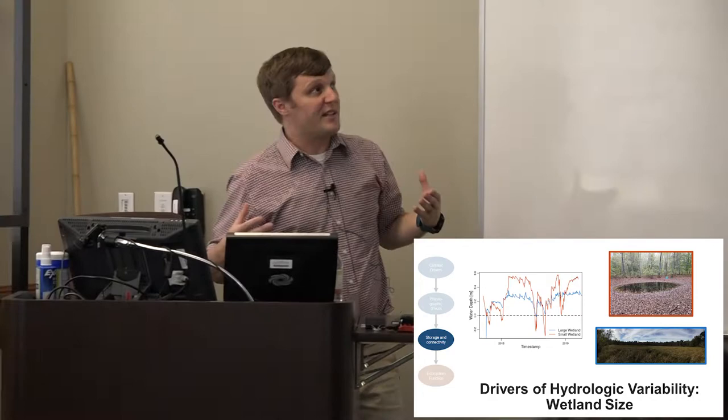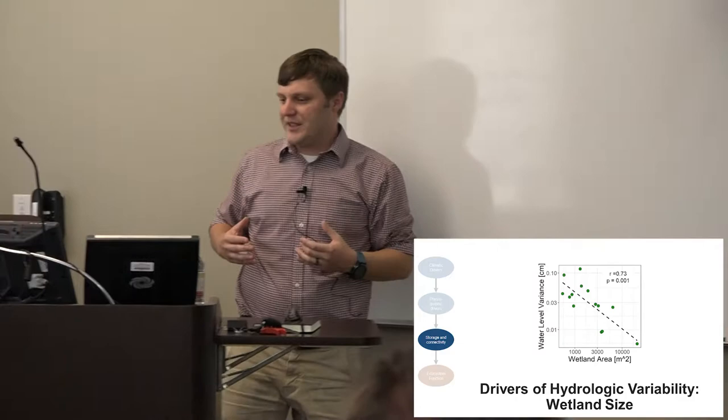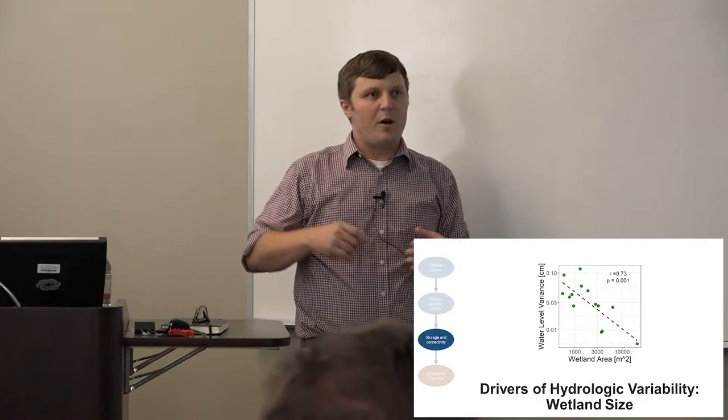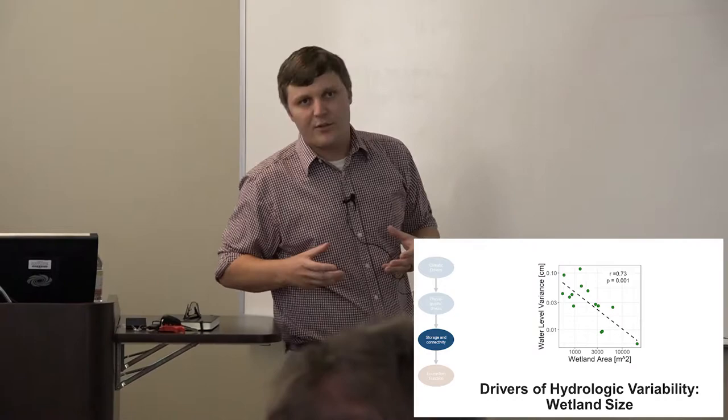And so when we look across our 20-some-odd wetlands, we do see that as you increase wetland area, you decrease wetland variance. And again, this is quite problematic. If you want to predict wetland extent, these smallest wetlands are quite important for biogeochemical cycling, especially methane production. And so they're the hardest to see and they're the hardest to predict because of this variability.